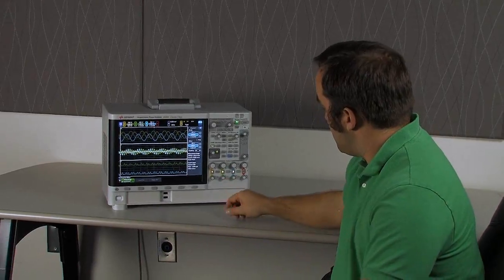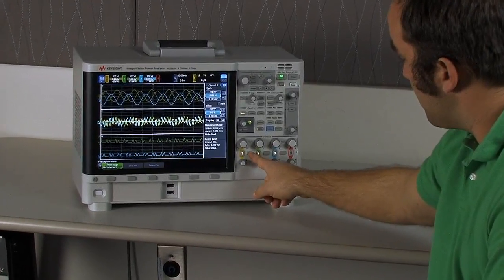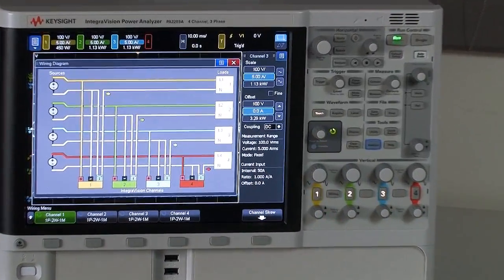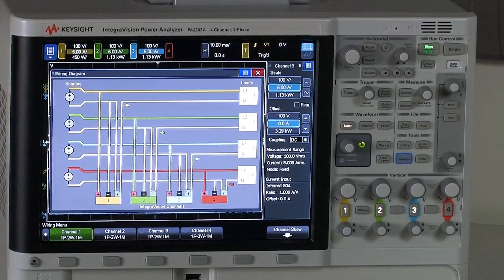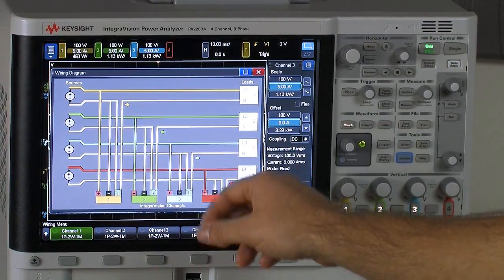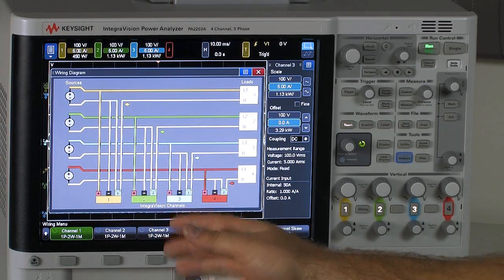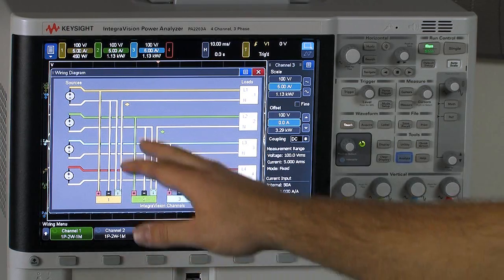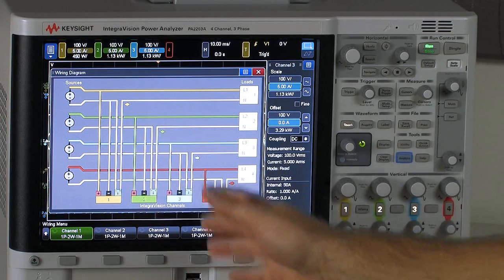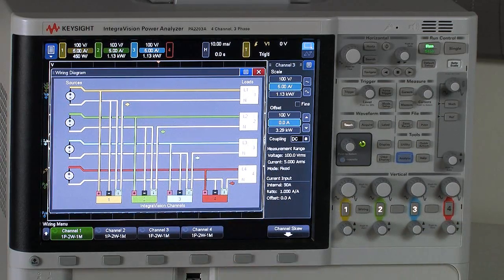To start off, I'm just going to go right over here and hit our wiring hard key. What you're going to see, this is going to bring up our wiring diagram. So as you can see, in the default state of the instrument, each of the four input power channels on the PA2203A are set up to be for individual measurements. They're completely separate. They're not grouped together.